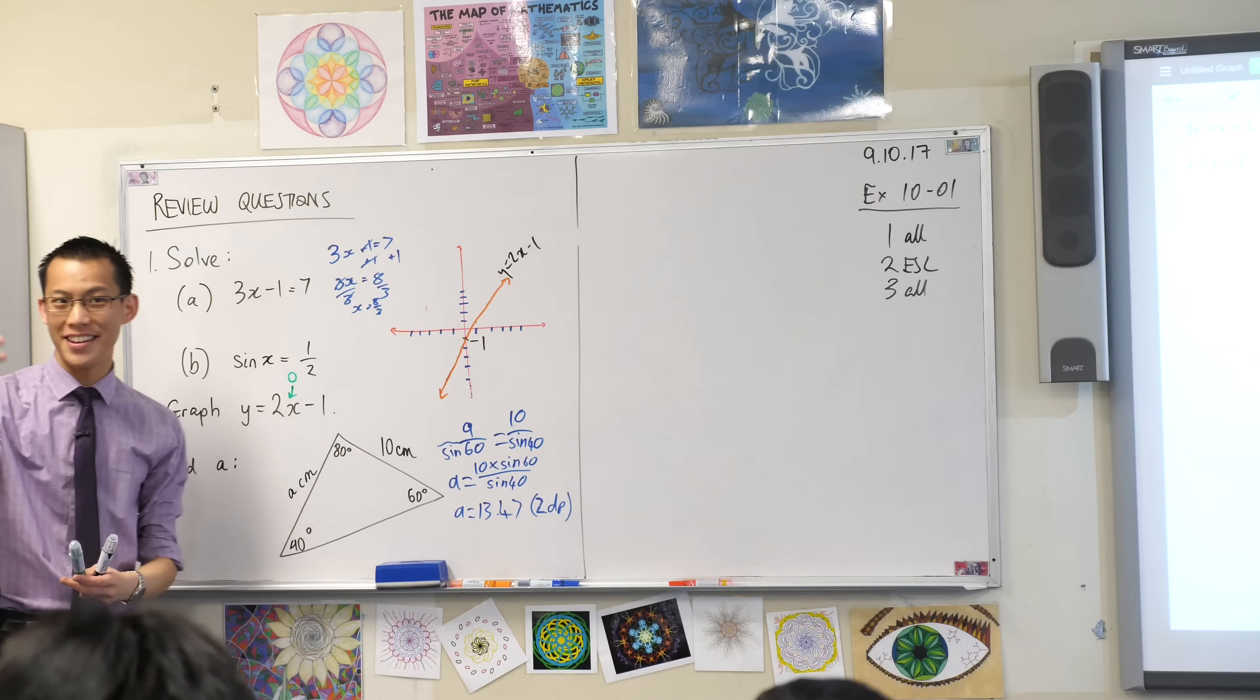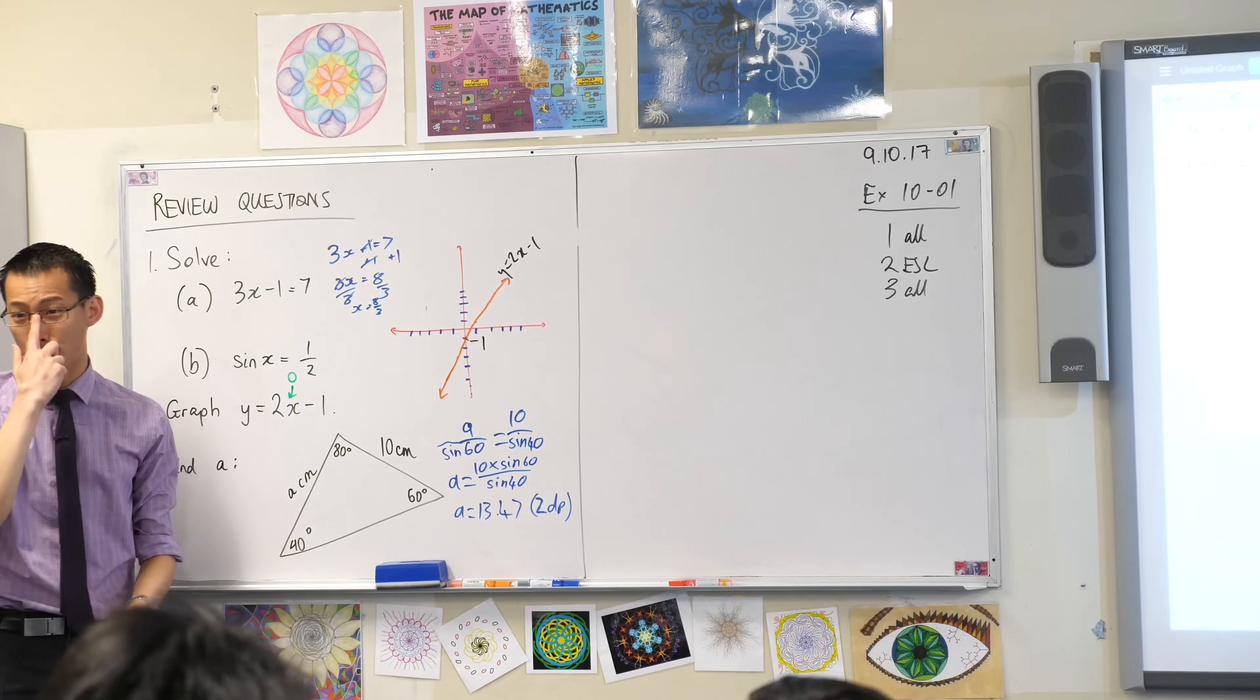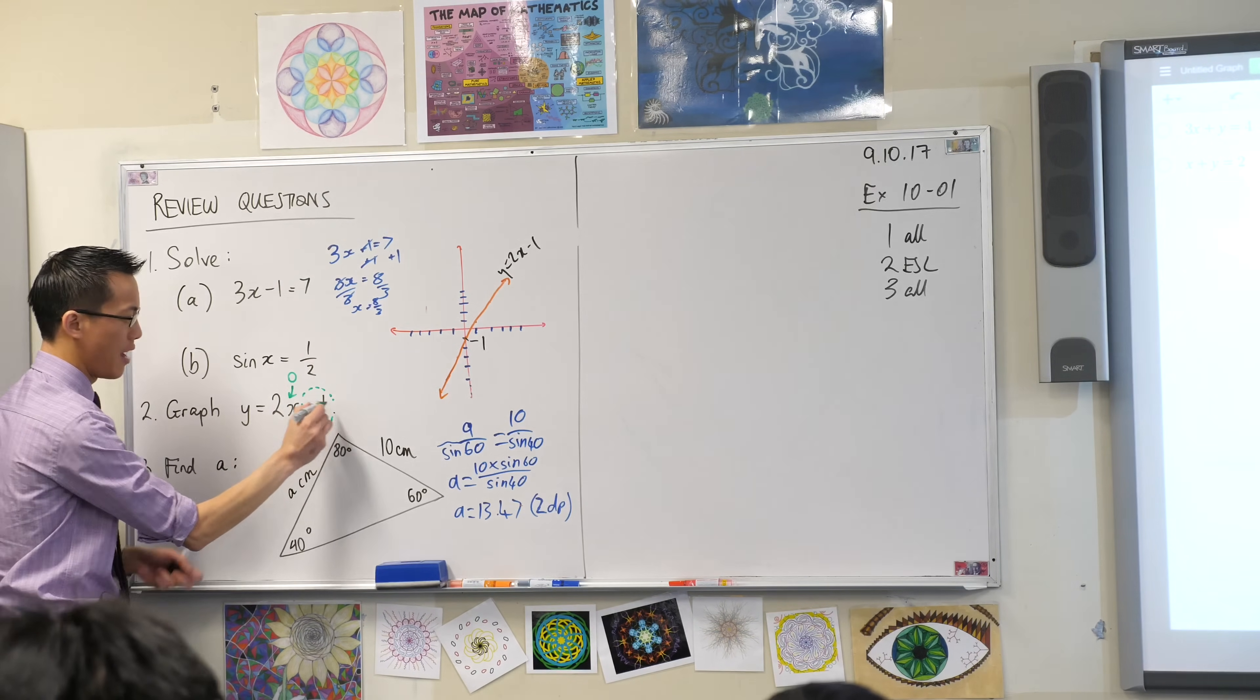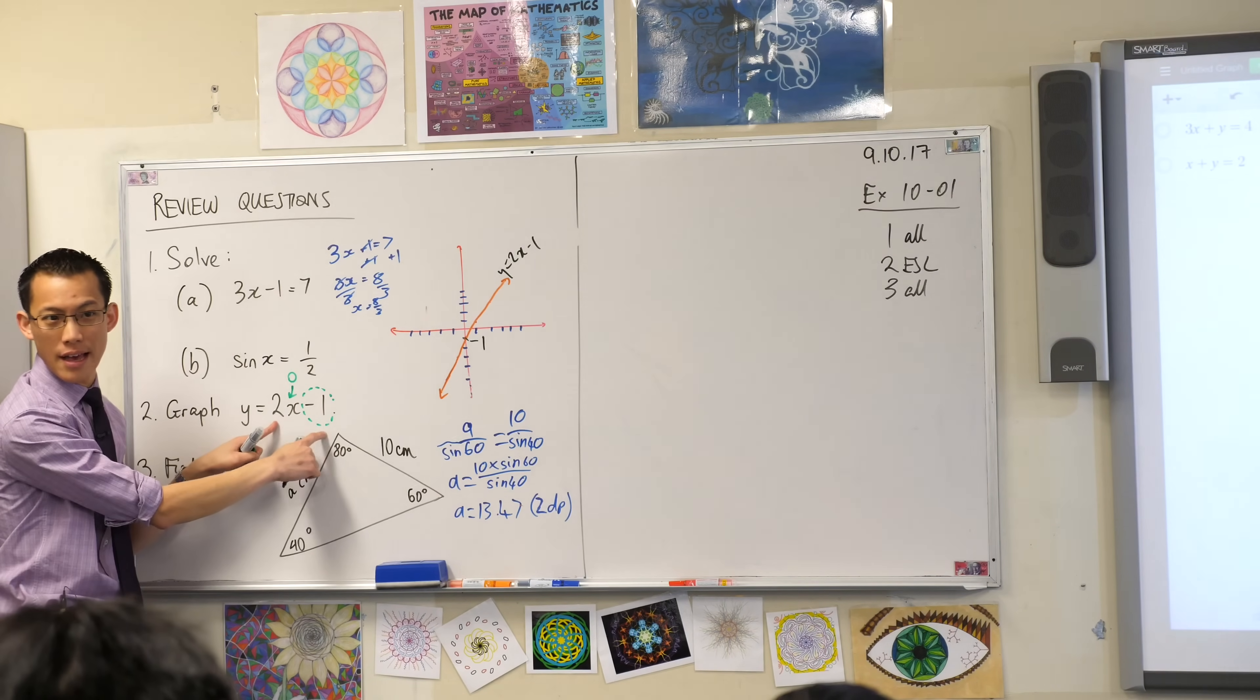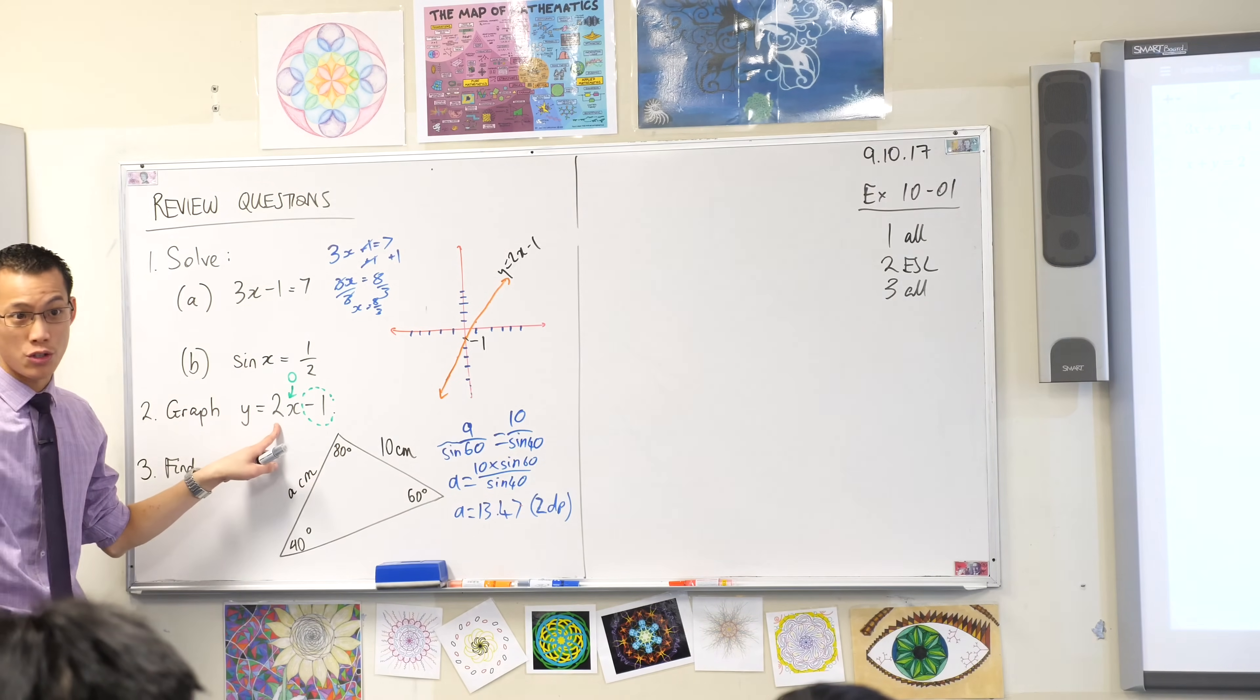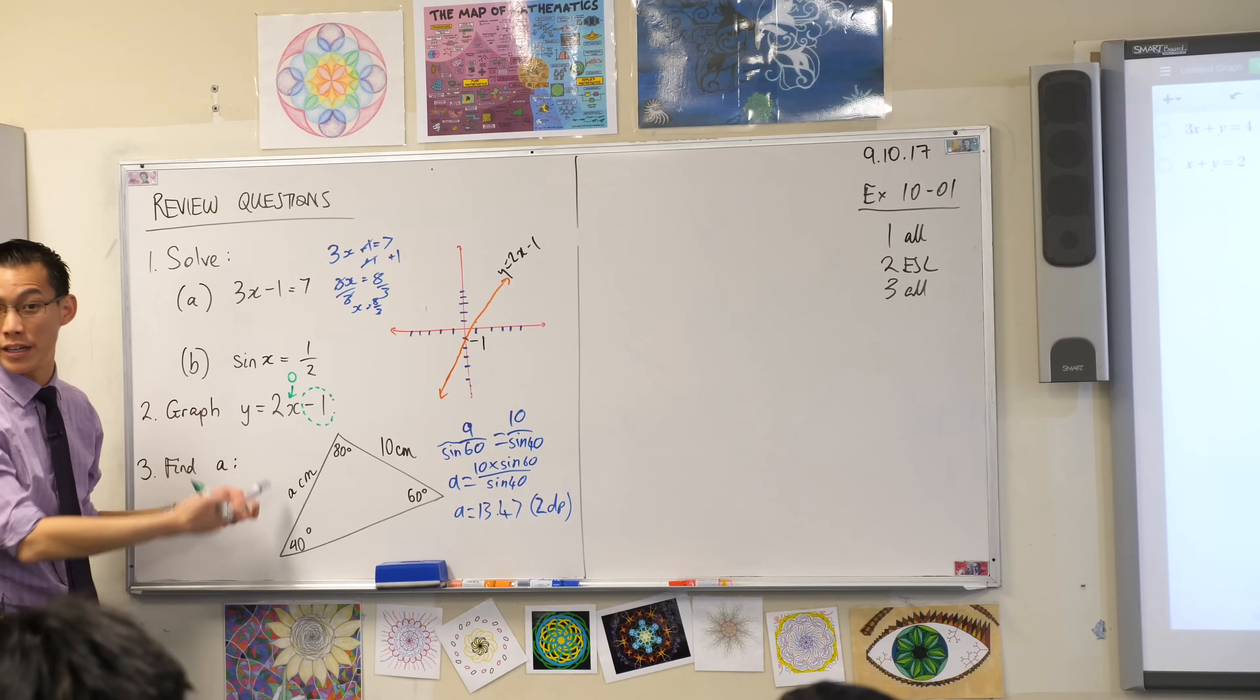If you substitute 0 into x, you get y equals 0 minus 1, which is negative 1. Another shortcut way is that I've given this equation to you in slope-intercept form. So the intercept is right there. I mean, you can work it out the way Agni worked out, which is you have to know how to do that. But because I've given it to you in this convenient way, you can actually just read it off.